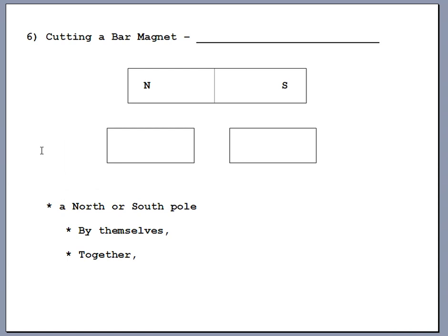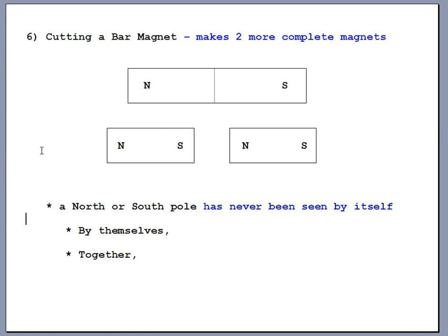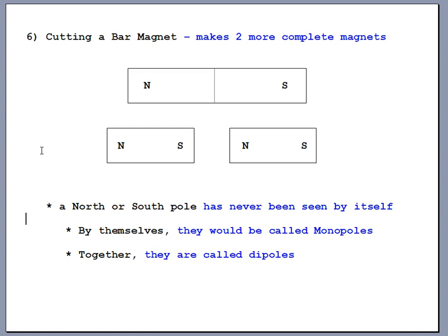What happens if you take a bar magnet and cut it in half with a hacksaw? You just end up making two complete magnets — every time you cut it in half you still get pieces with north ends and south ends, just two smaller magnets. We have never seen an isolated north pole or south pole by itself. If we ever did, they would be called monopoles. We've always seen them together as a north-south pair, and in that arrangement they're called dipoles.